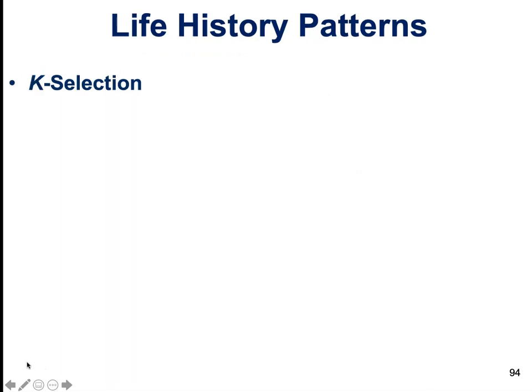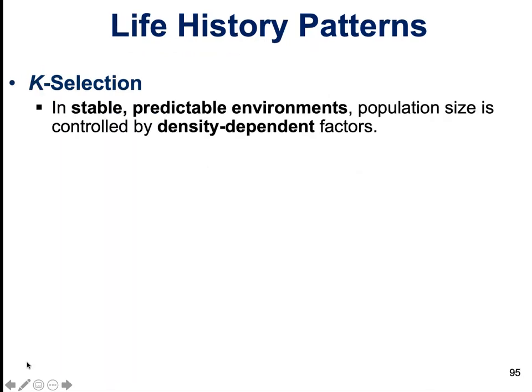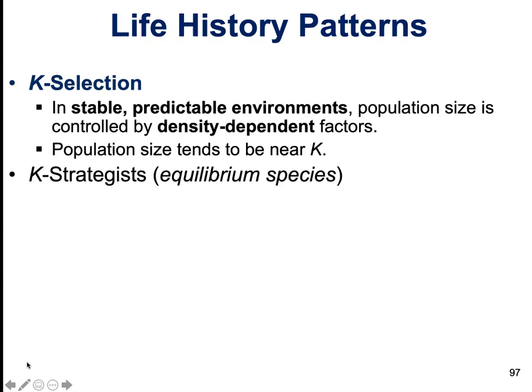K-selection, on the other hand, is found in stable, predictable environments. The population size is controlled by density-dependent factors, and the population tends to be near K — meaning there are about as many individuals as the environment can support. These are known as equilibrium species, living right at the stable equilibrium phase of the logistic growth curve.